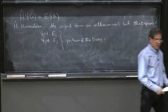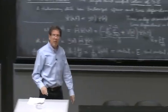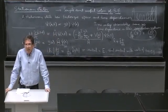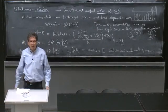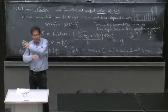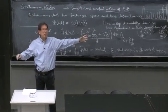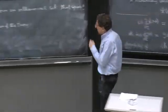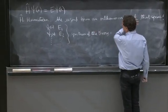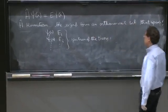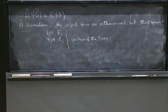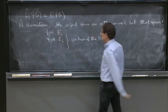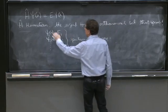Energy eigenstates are considered the gold standard. If you want to solve a theory, it means finding the energy eigenstates. Because if you find the energy eigenstates, you can write any wave function as a superposition of energy eigenstates and then just let them evolve. The energy eigenstates evolve easily because they are stationary states. So the spectrum of the theory is a collection of numbers — the allowed energies — and of course the associated eigenfunctions.